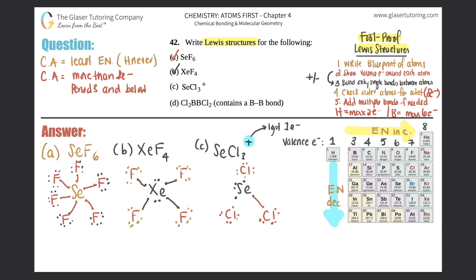Now make the single bonds: one and one, one and one, one and one. Check the outer atoms: each chlorine has two, four, six, eight electrons - good. Check the central atom: selenium has two, four, six, eight - it has the octet. It doesn't have more, but that's okay; as long as it has the octet that's fine. Since it had a charge, we bracket the structure and state the plus charge. That's the answer for part C.